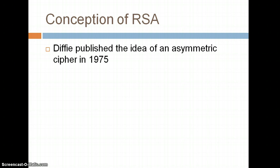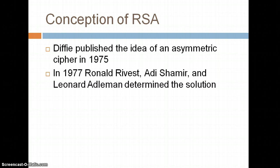He just had this idea, though. He didn't actually know what method would actually be used to go about doing it. So in 1977, Rivest, Shamir, and Adleman found the solution, which is the RSA algorithm, which is named after the first initial of each of their last names.